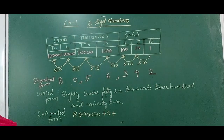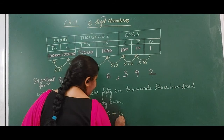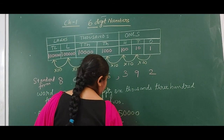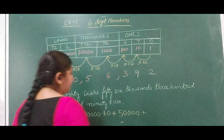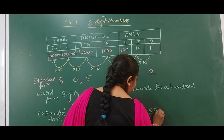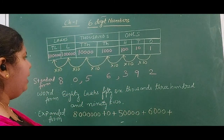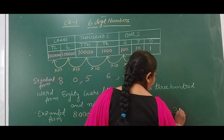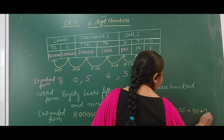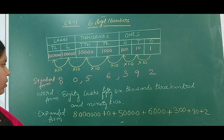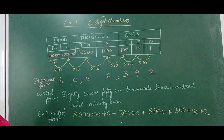Then we have 5, which is in the 10,000s place, so we will write it as 50,000. Then comes the next digit, 6, which is in the 1,000s place, so 6,000. And then comes 3, 9, 2 — so 300 plus 90 plus 2. This is our expanded form of writing the number.